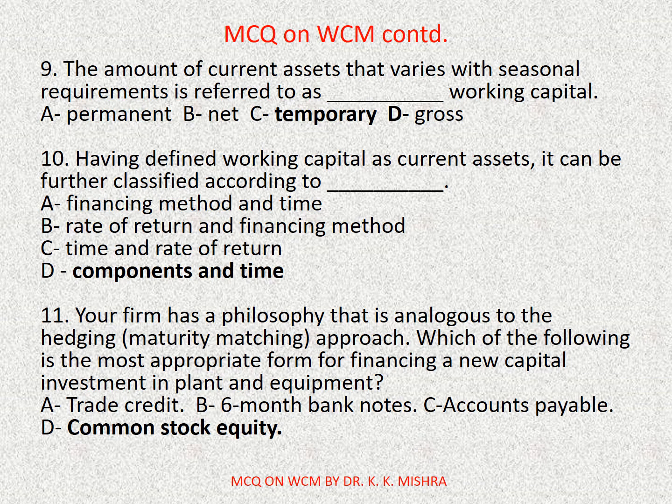Question number ten: having defined working capital as current assets, it can be further classified according to — options are: A) Financing method and time, B) Rate of return and financing method, C) Time and rate of return, D) Components and time. Correct option is D: Components and time.